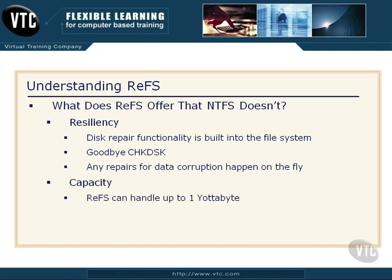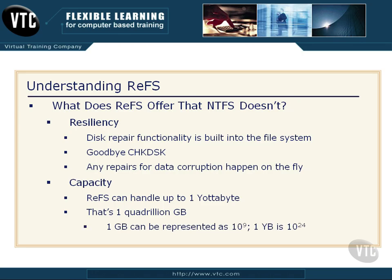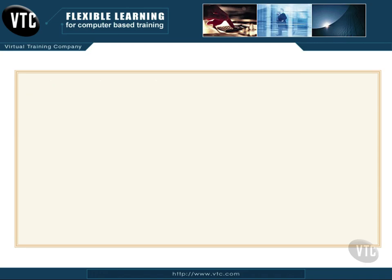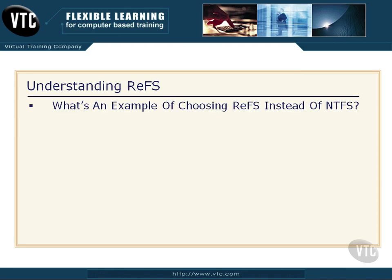ReFS can handle up to one yottabyte of capacity. You've probably never heard of a yottabyte — that's about one quadrillion gigabytes. It's an unbelievable amount of data. Another way to represent this: one gigabyte is 10 to the ninth power, while one yottabyte is 10 to the 24th power. So for the binary nerds out there, that gives you a clear picture of exactly what's going on with the size.